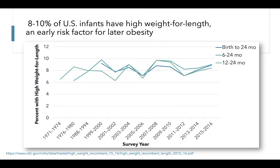Here we have data for infants aged birth to 24 months. These data span from 1971 to 2016 and show changes in the prevalence of infants with high weight for length across this time period. The dark blue bar is for both age groups combined, whereas the lighter bars are for 6 to 24 month olds or 12 to 24 month olds separately. The prevalence of high weight for length has been somewhat stable across this time period, and most recent data illustrate that 8 to 10% of U.S. infants are classified as having high weight for length.